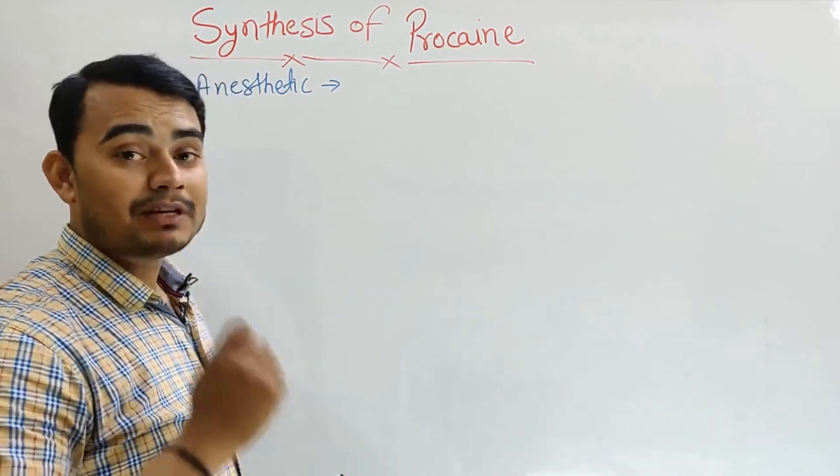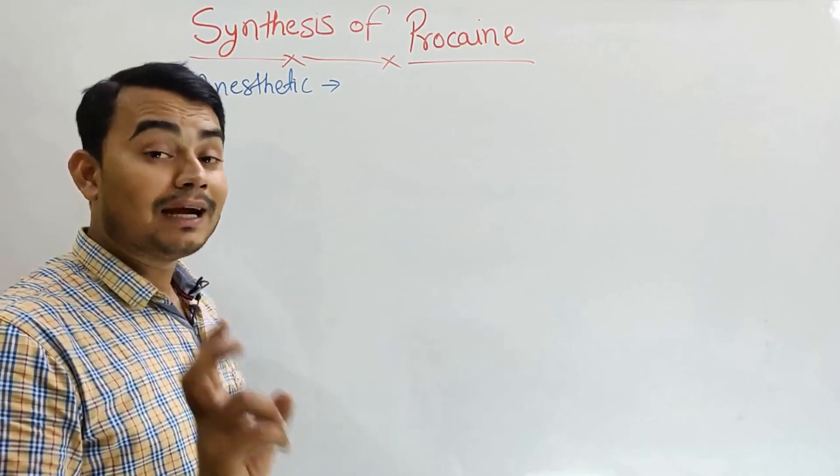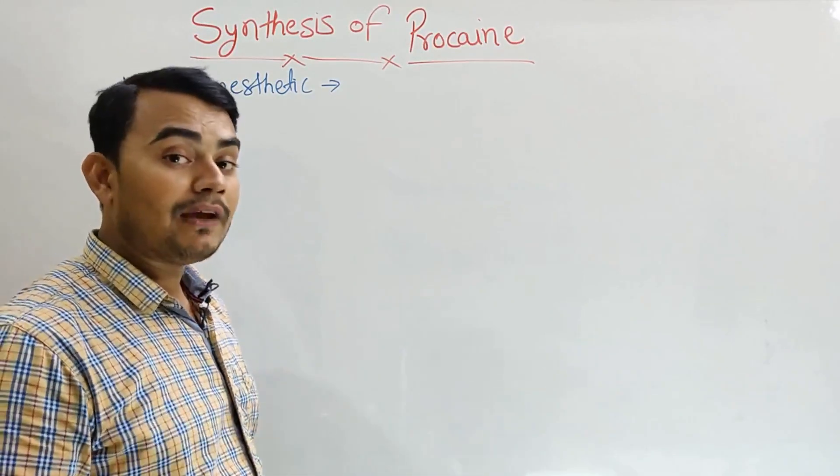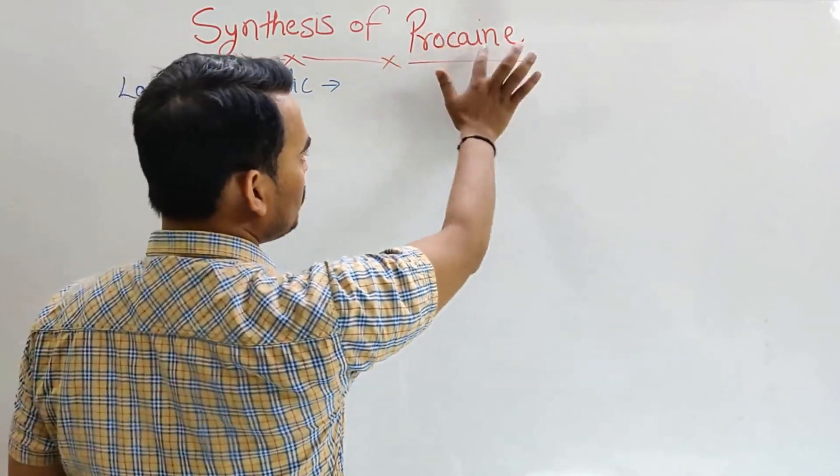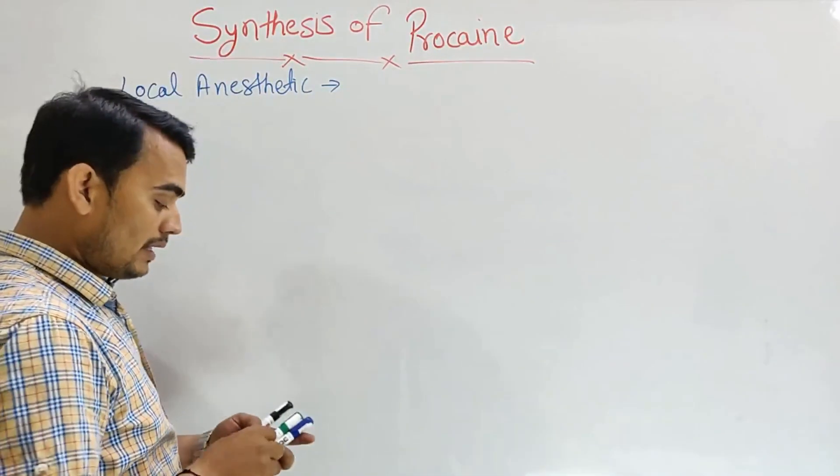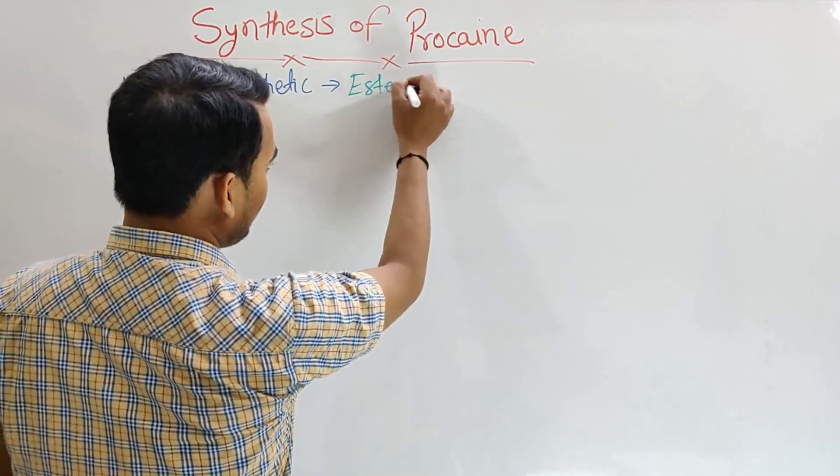I have in my previous video told that if any drug has 2 i's, that will be the amide derivative. And if any drug has a single i in their name, that will be the ester derivative. Here we can find out that there is only one i, so it's an ester derivative.